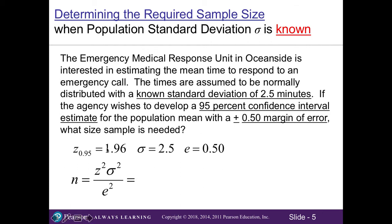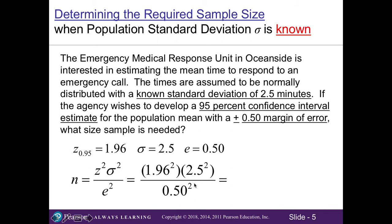We want to identify all variables. Our Z value at 95% confidence is 1.96. Our standard deviation is 2.5 minutes, and the desired margin of error is 0.50. Plugging in all numbers, we square 1.96 and 2.5, multiply them together, then divide by 0.5 squared. That gives us 96.04.